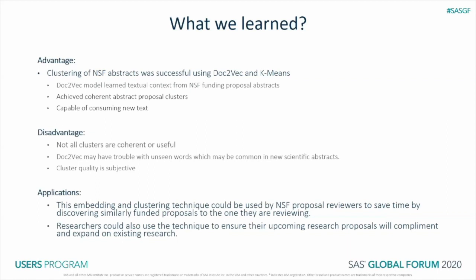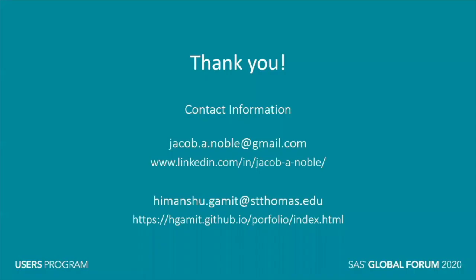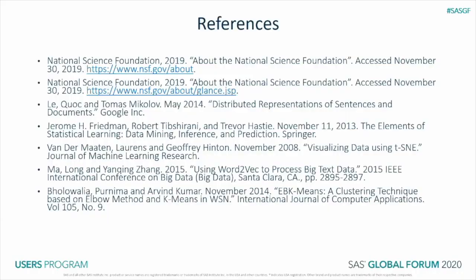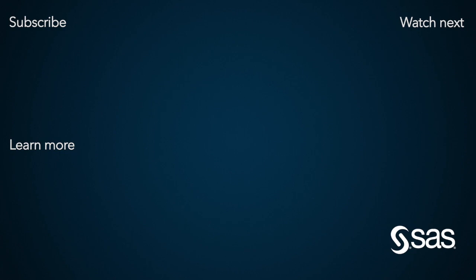We set out to develop a technique for improving the NSF proposal reviewer's ability to process and review new proposals. This embedding and clustering technique was successful — it does produce coherent proposal clusters based on textual context. This technique can help reviewers see how new proposals can build upon the research of others. Thank you for listening to our presentation; feel free to reach out to us.